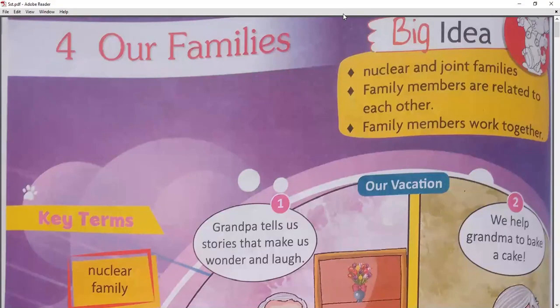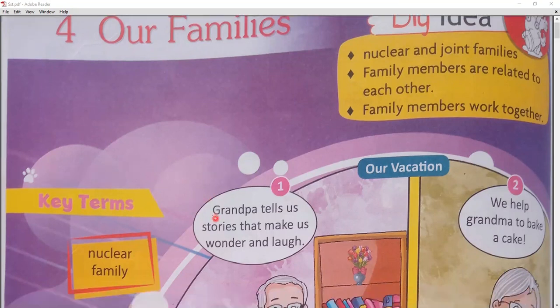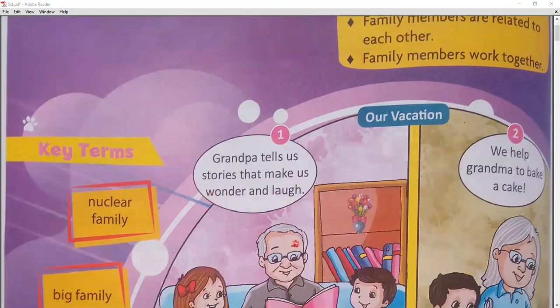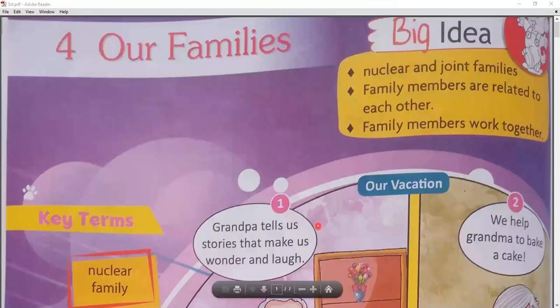Lesson number 4 is about families. What is your family? Today we are going to read about family — what types of families are there. What are nuclear and joint families? Nuclear means small family, and joint means big families.